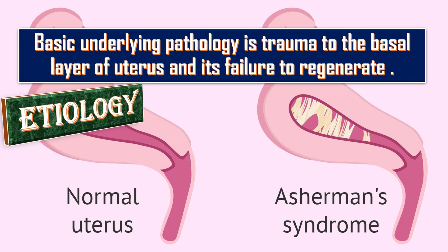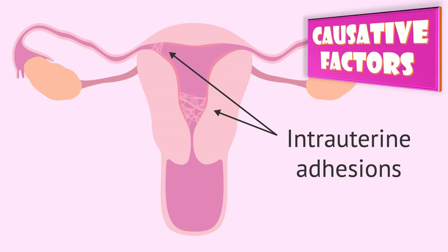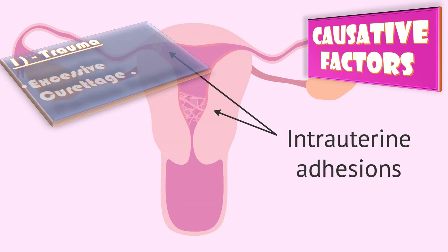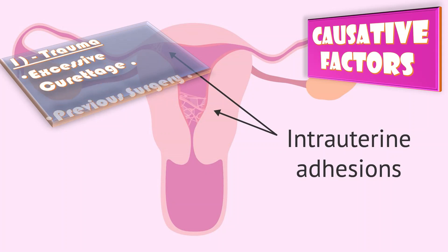What is the etiology behind Asherman syndrome? The basic underlying pathology is trauma to the basal layer of the uterus and its failure to regenerate. What are the causative factors of Asherman syndrome?